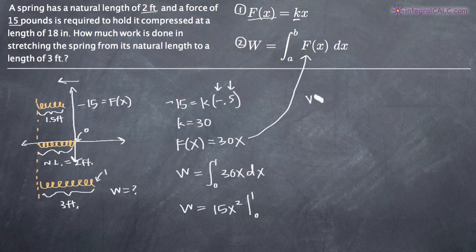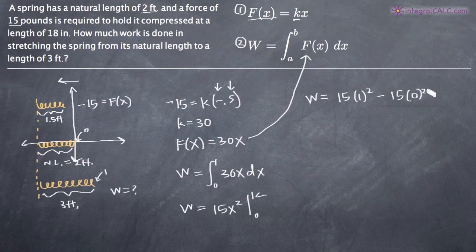And as you know with definite integrals, we plug in the upper limit or this top number first. So we'll get 15 times 1². Then we subtract and plug in the lower limit or the bottom number and we get 15 times 0². And when we simplify this, we can see that we're going to get 15 minus 0 which of course is just going to be 15.